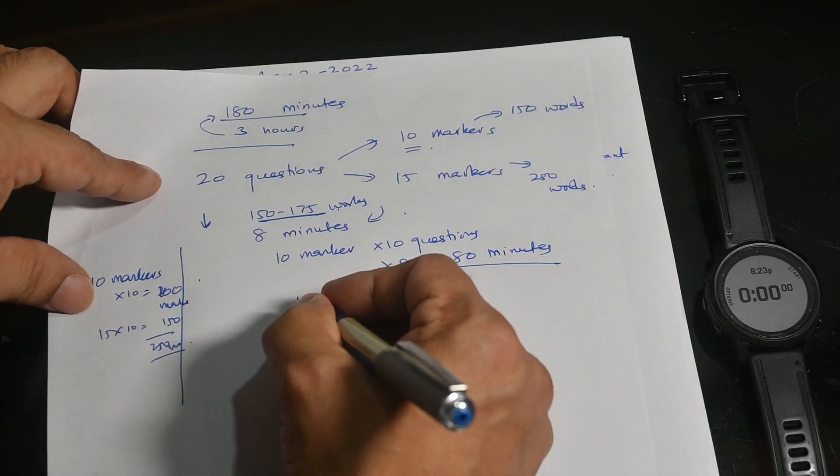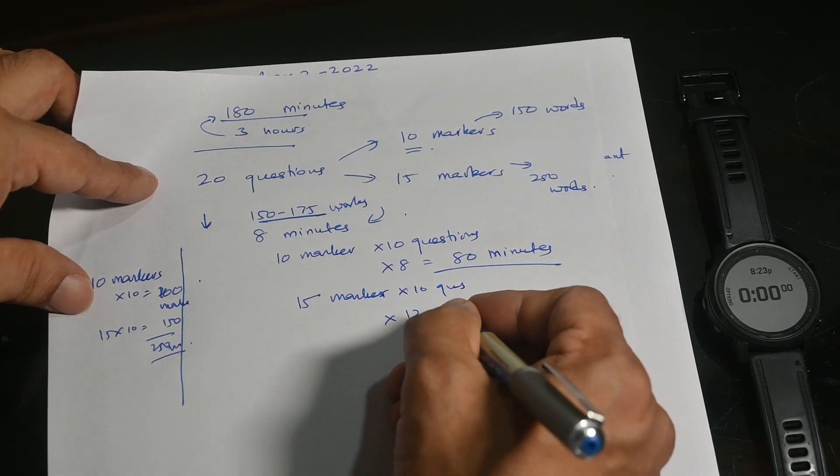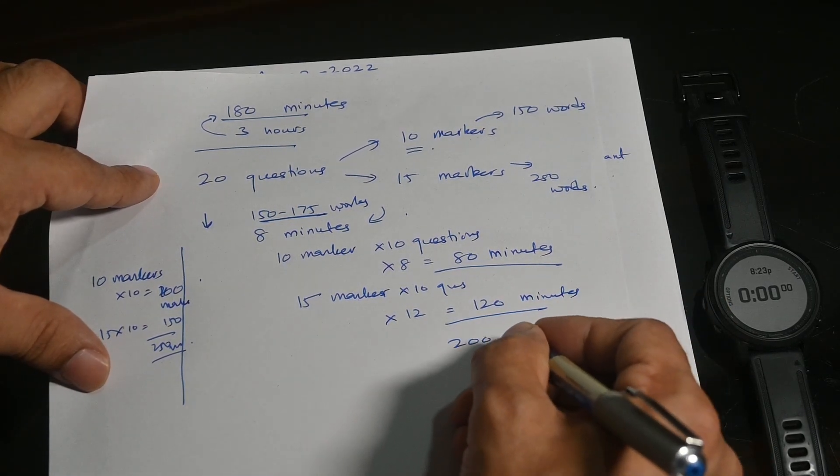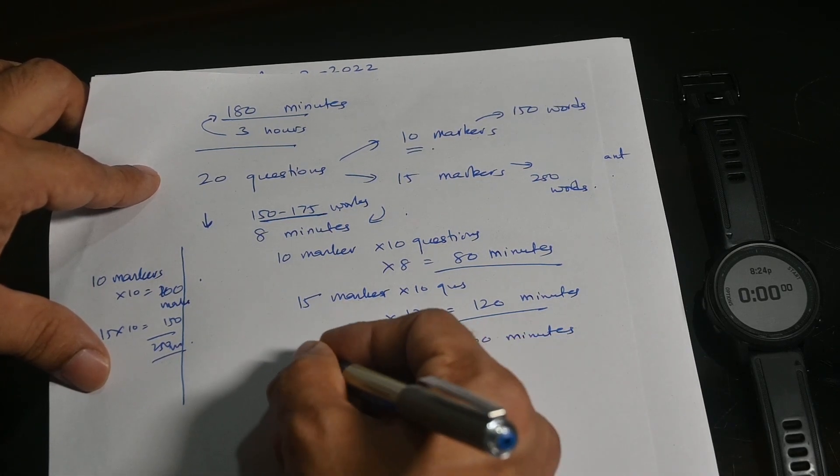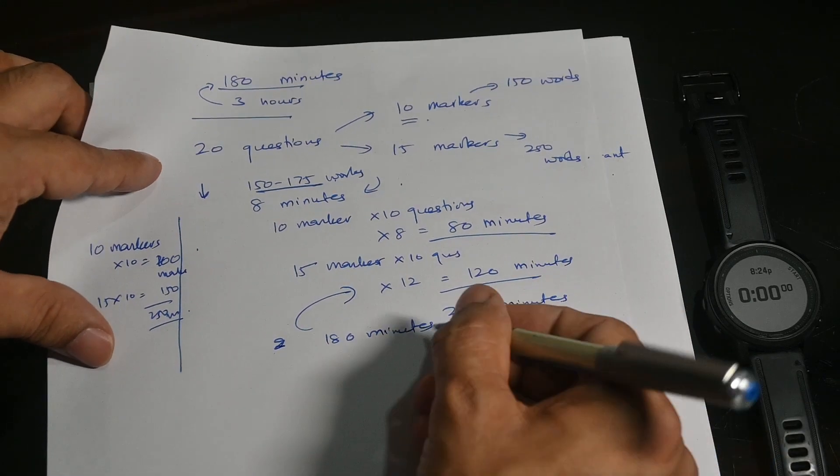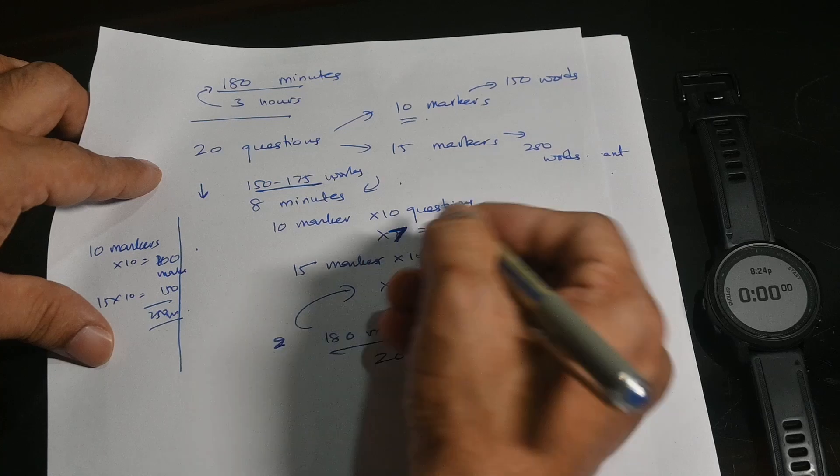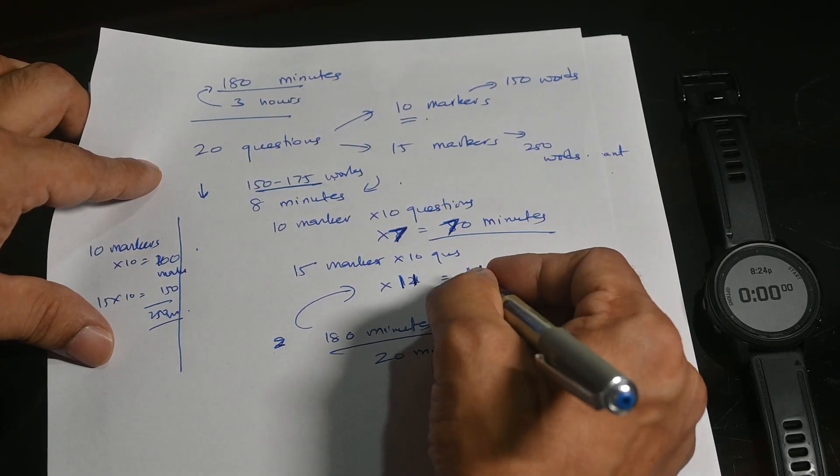How many 10 markers are there? 10 ten-markers and 10 fifteen-markers. All right, then 10 marker questions, and if you take around eight minutes for every question, you will do them in 80 minutes. Similarly, 15 markers, there are 10 questions. And if you do each of them in 12 minutes, that's 120 minutes, the total of 200 minutes, and you have 180 minutes. So obviously this is 20 minutes more.